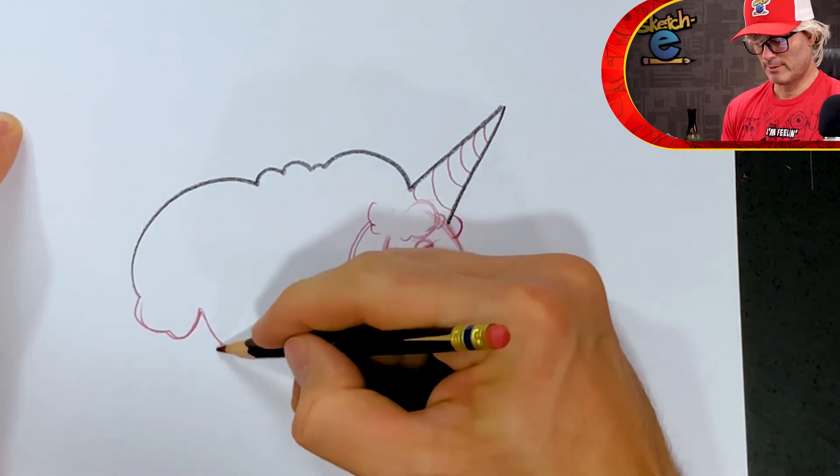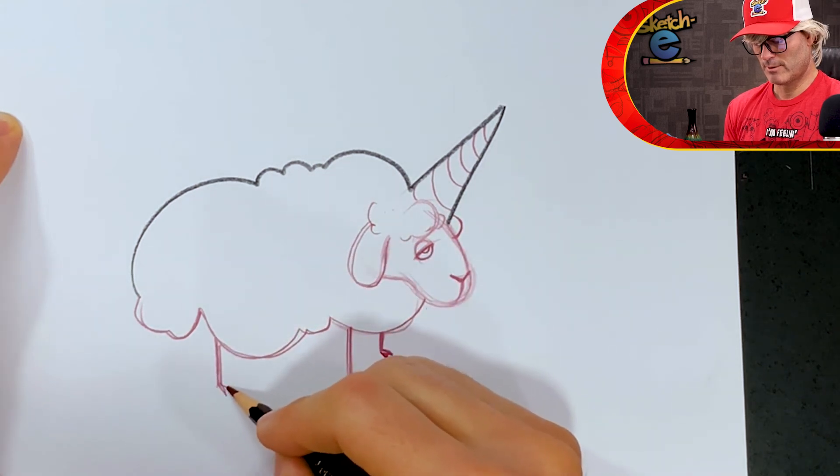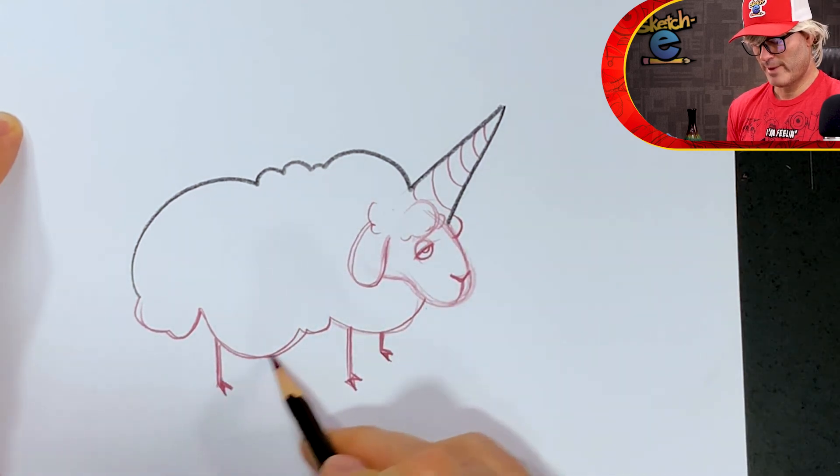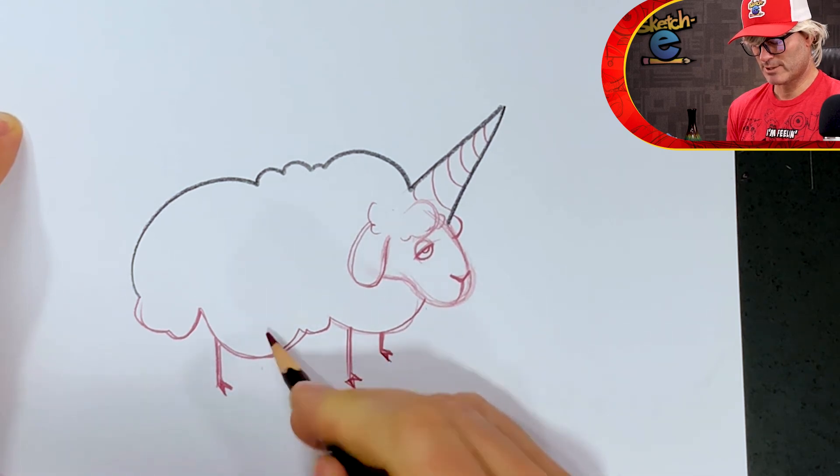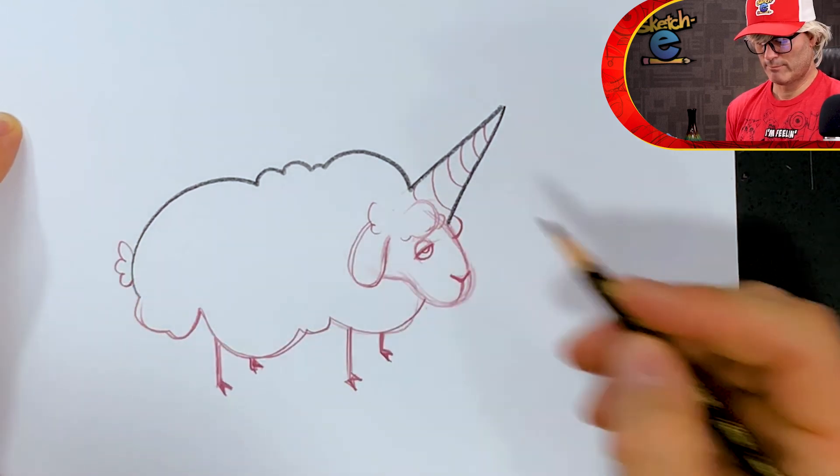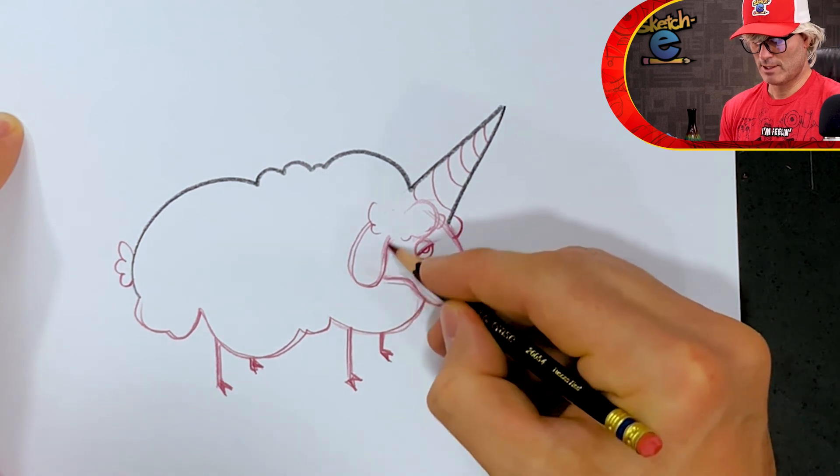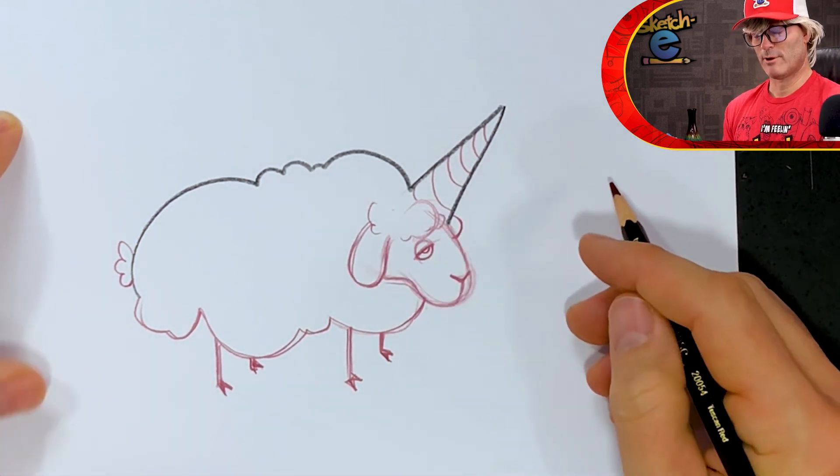This is kind of weird. But I'm going to draw the front foot right here. A little V shape. And then the back foot, it's going to come up a little bit. So maybe the back looks like right here. He's got a little tail. Sleepy sheepicorn. That was challenger number three. That was fun.